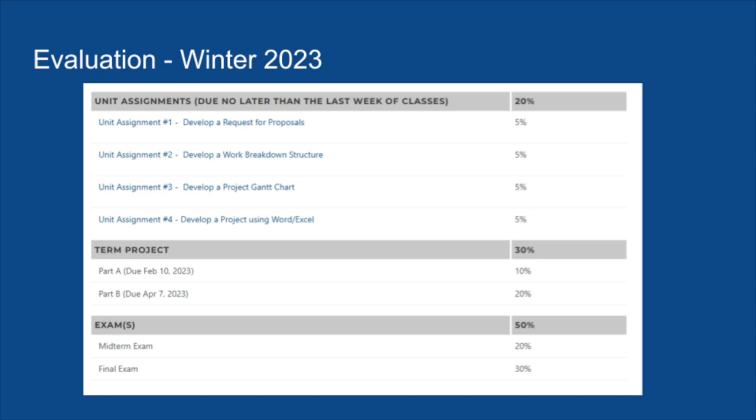The evaluation for the course is pretty straightforward. We have three broad types of projects. First, we're going to be doing unit assignments — at the end of four of the course units, I have a short assignment where you'll take the material from that unit and apply it to some topic: developing a research proposal, work breakdown structures, Gantt charts, and developing a project using Word or Excel. There are four of those, worth 5% each for a total of 20%.